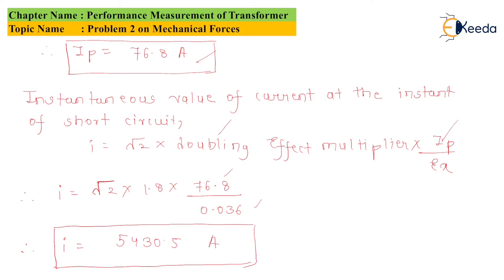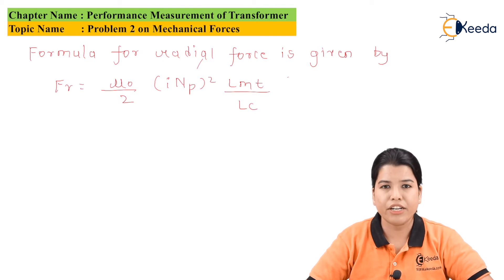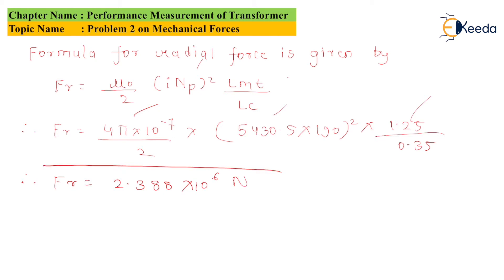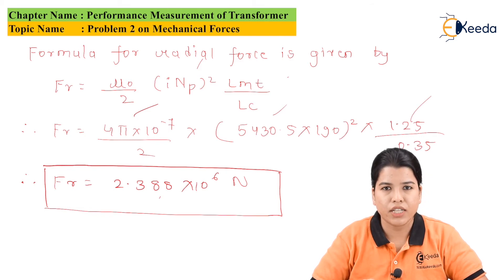Therefore I = 5430.5 Amperes. Now let us find the radial force: Fr = (μ₀ / 2) × I × Np² × LMT / Lc. Substituting the values: Fr = (4π × 10⁻⁷ / 2) × 5430.5 × 190² × 1.25 / 0.35. After solving this equation, Fr = 2.388 × 10⁶ Newton.